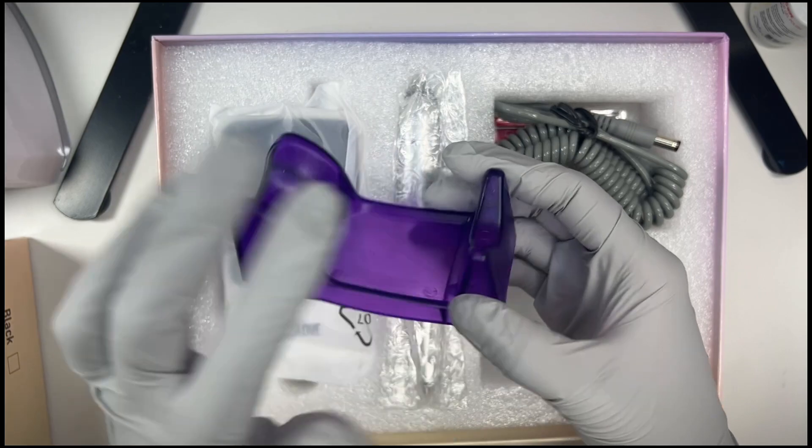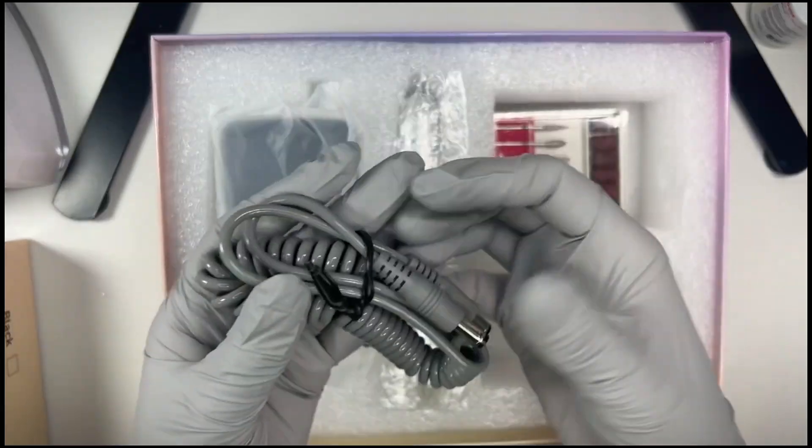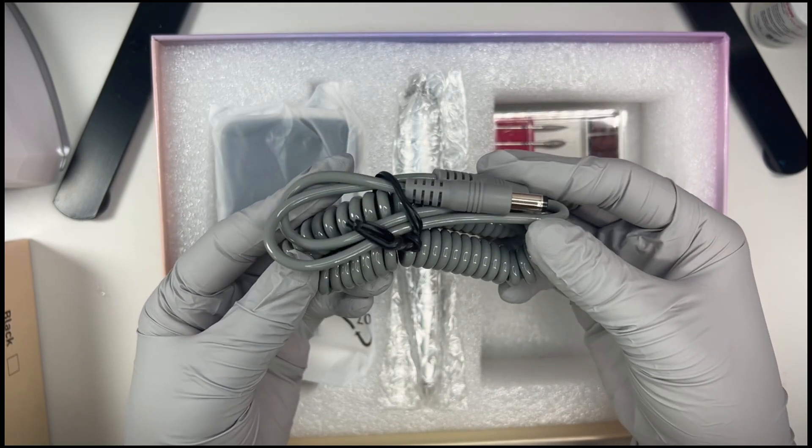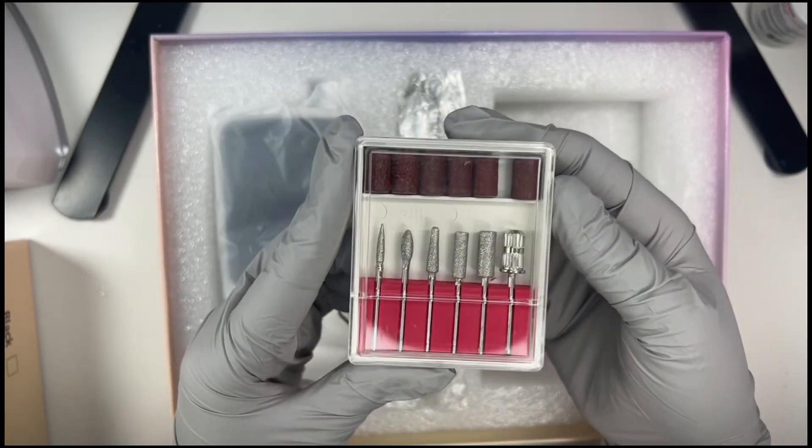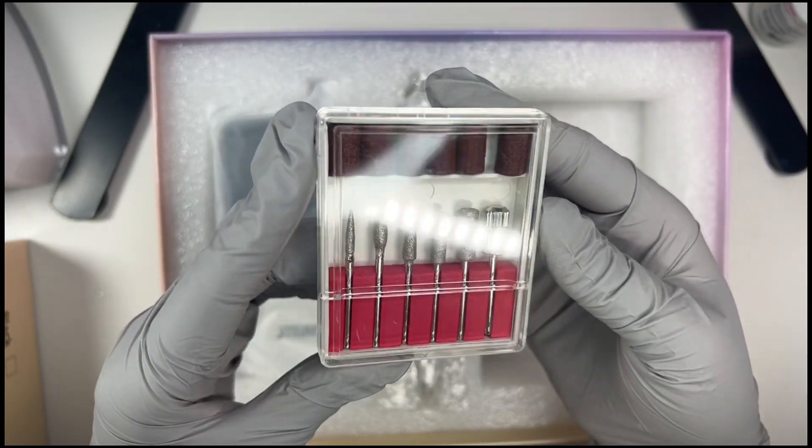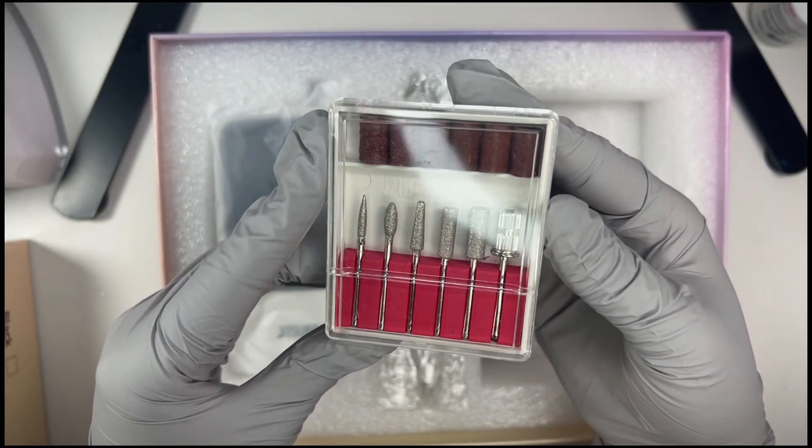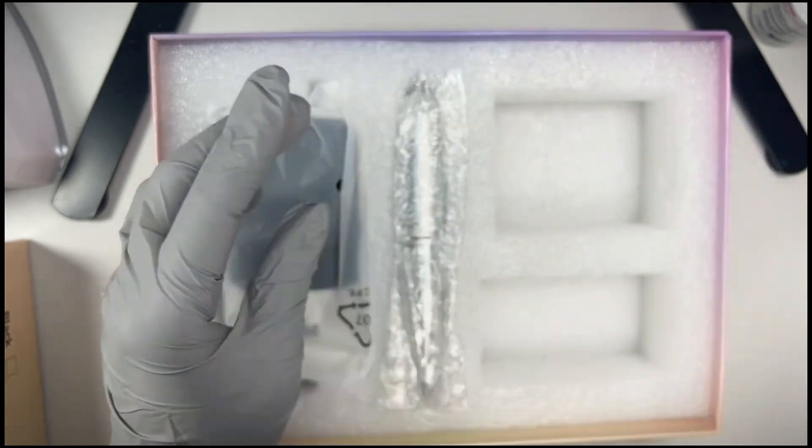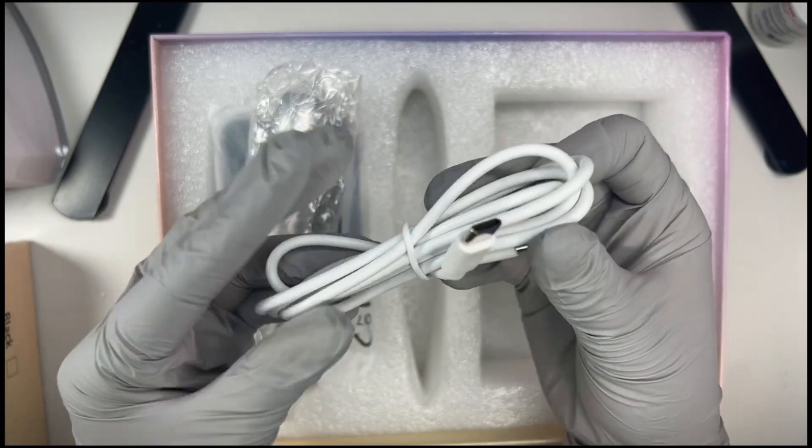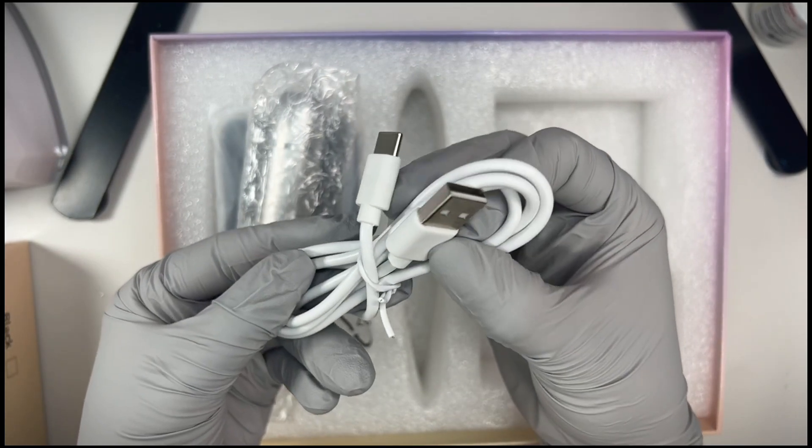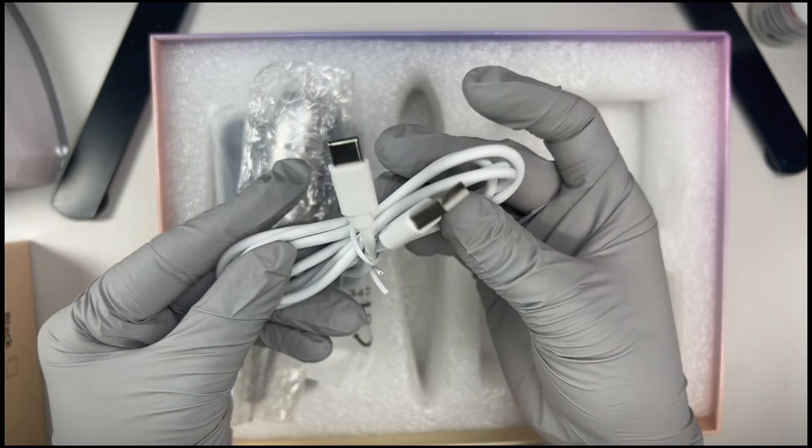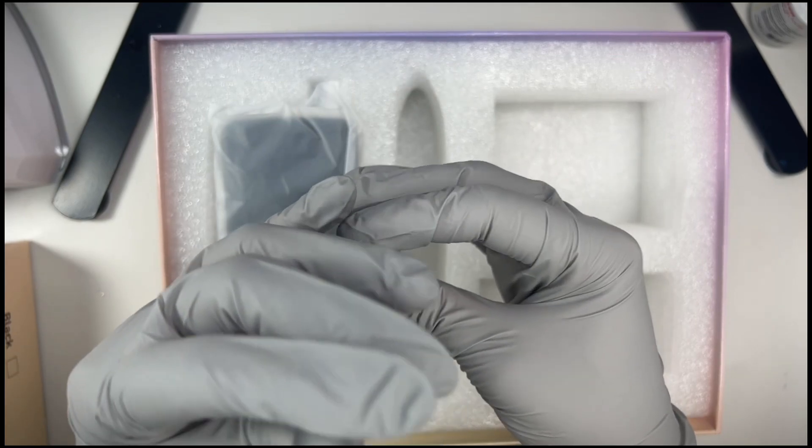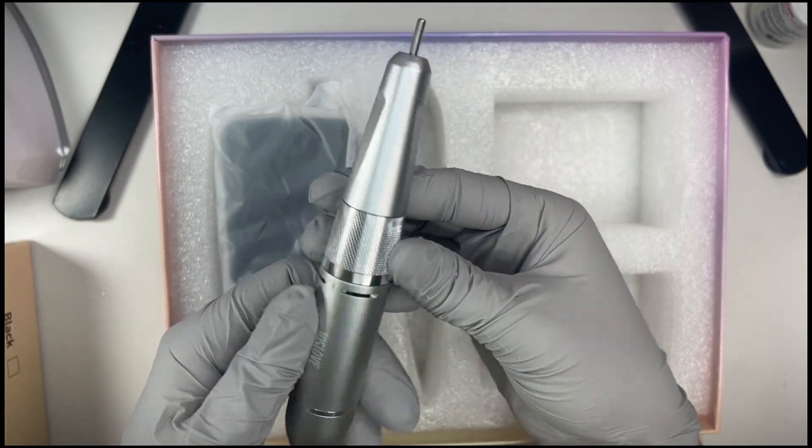And then everything that typically comes in a drill you'll get here. So you'll get the attachment for the side, you'll get this little stand to hold the hand piece, this cord will attach the hand piece to the actual box, and then these are the standard drill bits that you always get. We have the charger here and we have the actual hand piece which is really nice. It does have a little bit of weight to it, surprisingly it's a little bit heavier than the one that I'm using currently but that's okay.